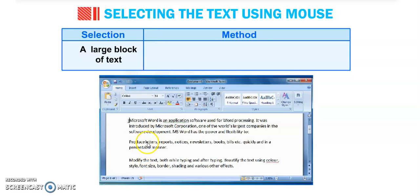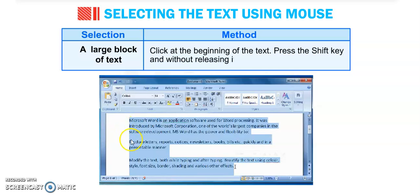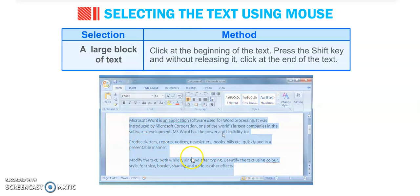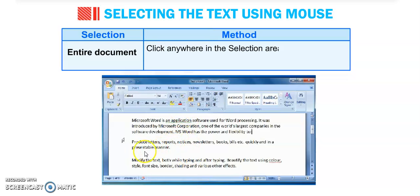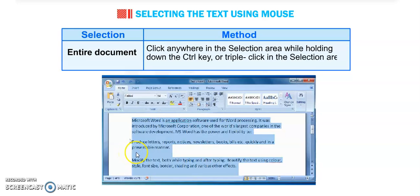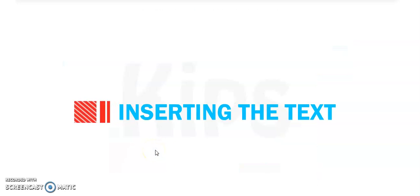To select a large block of text, click at the beginning of the text, press and hold the Shift key, then click at the end of the text — it will select the whole section you have dragged. To select the entire document, click anywhere in the selection area while holding down the Ctrl key, or triple-click in the selection area — it will also select the whole document.